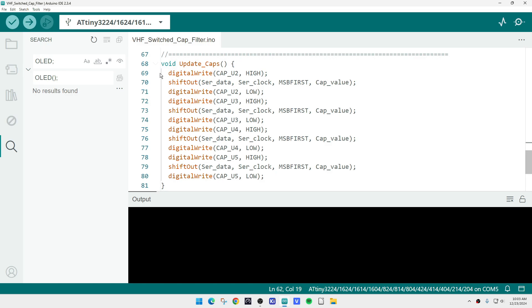So update the caps looks like this: you use the enable line, you set the enable line high, write the data out, and then set the enable line low. And then you do that for U2, 3, 4, 5.